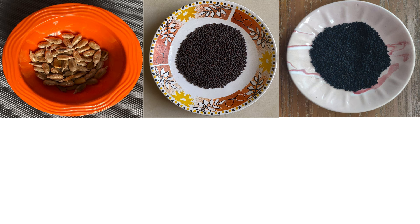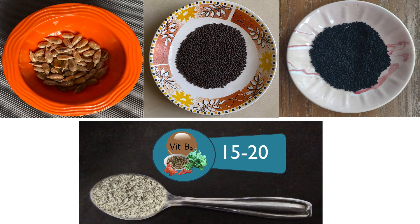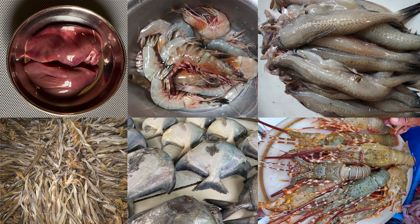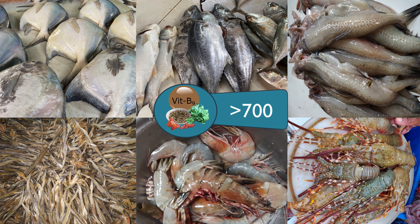Sunflower seeds, mustard seeds, and niger seeds have a small amount of folate — about 15 to 20 micrograms per tablespoon of powdered seeds. Among non-vegetarian foods, chicken liver and all seafood are excellent sources. One chicken liver of 60 grams gives about 600 micrograms of folate, and 100 grams of any seafood gives more than 700 micrograms.